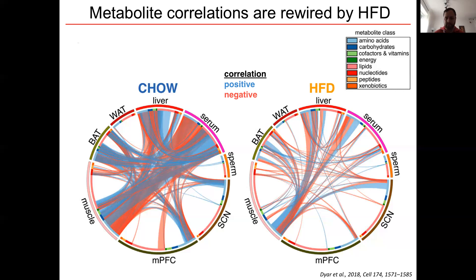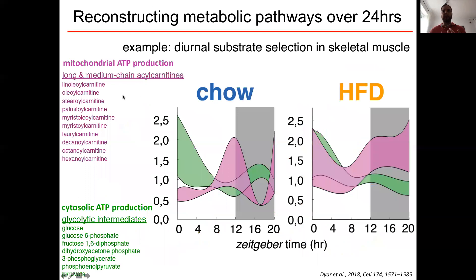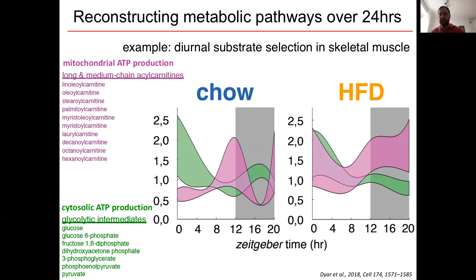One of the interesting things we can do with this kind of data is reconstruct metabolic pathways over 24 hours. For example, muscle glycolytic intermediates and acyl carnitines represent cytosolic or mitochondrial energy production, and both show a dynamic oscillation throughout the day under a chow diet, with peaks confined to distinct temporal windows — reflecting a clear delineation in 24-hour fuel selection in the muscle. However, in mice under a high-fat diet, these glycolytic intermediates are blunted at night during the feeding phase, whereas acyl carnitines remain at peak levels. This implies impaired metabolic flexibility, and increased lipid metabolism is known to cause muscle insulin resistance. Viewing metabolomics data from this temporal perspective gives insight into when differences might be most relevant for causing disease and when the best time is to administer a particular intervention.